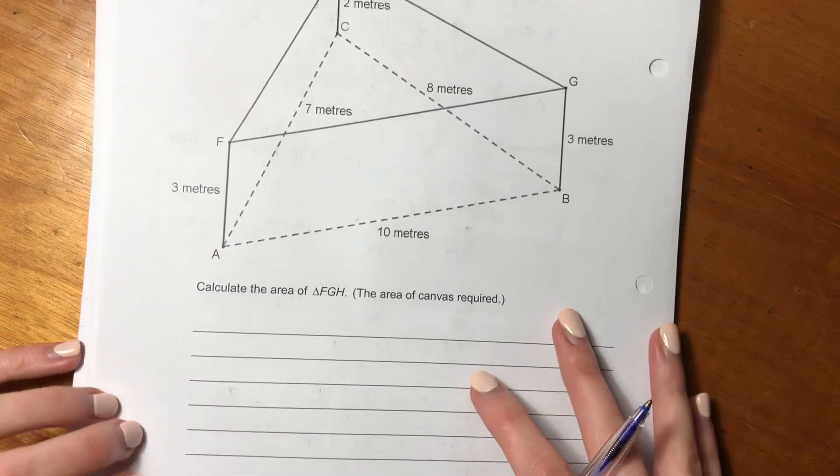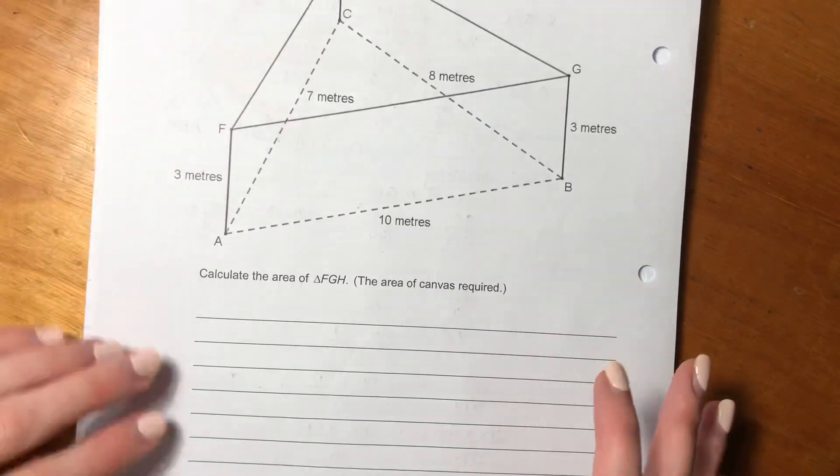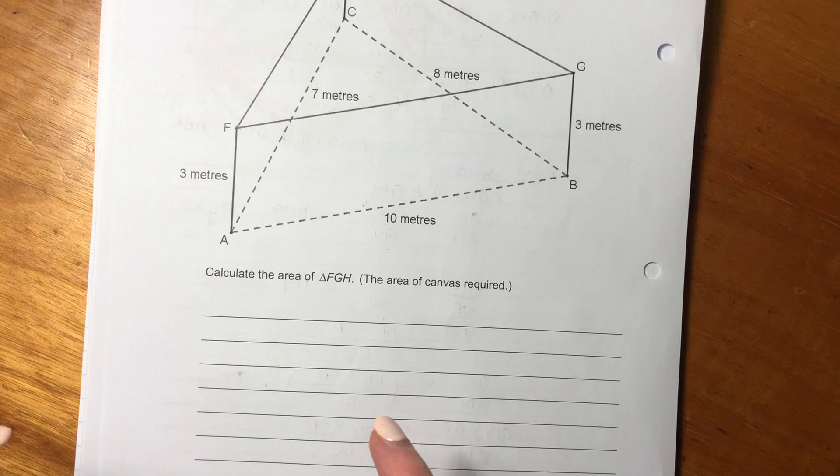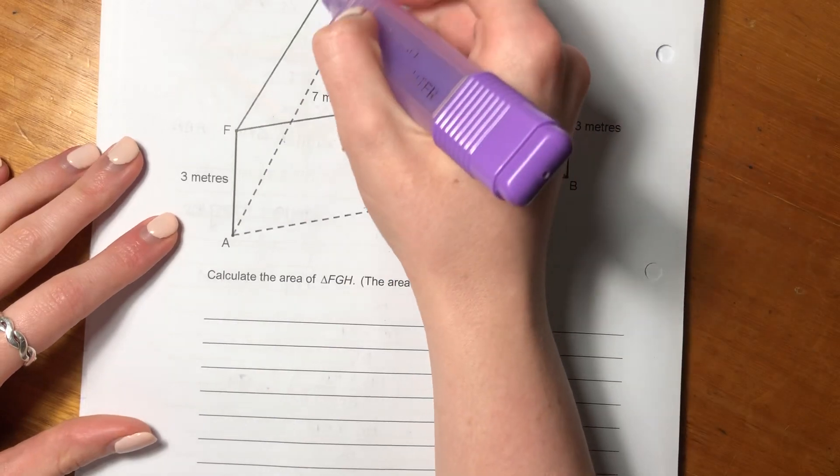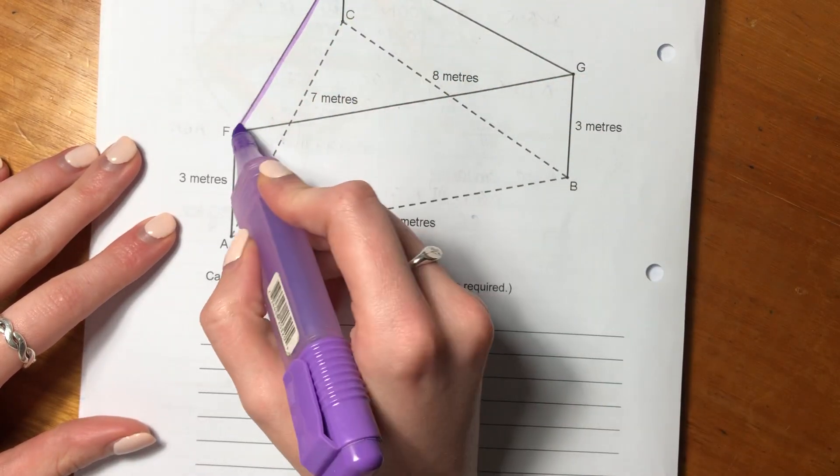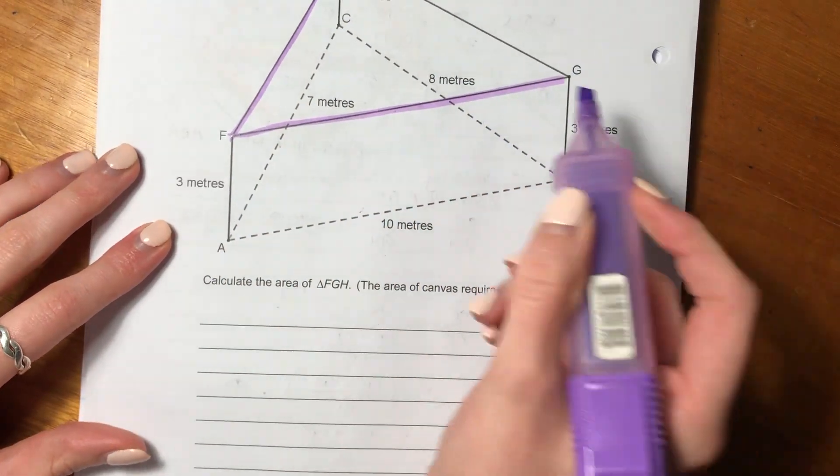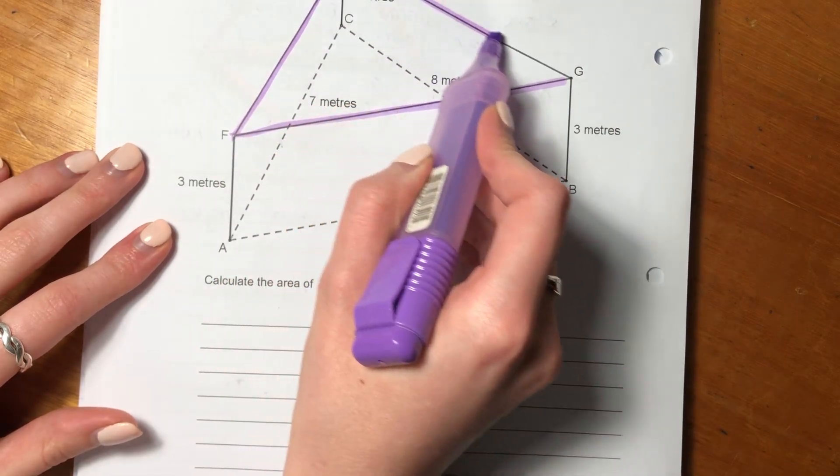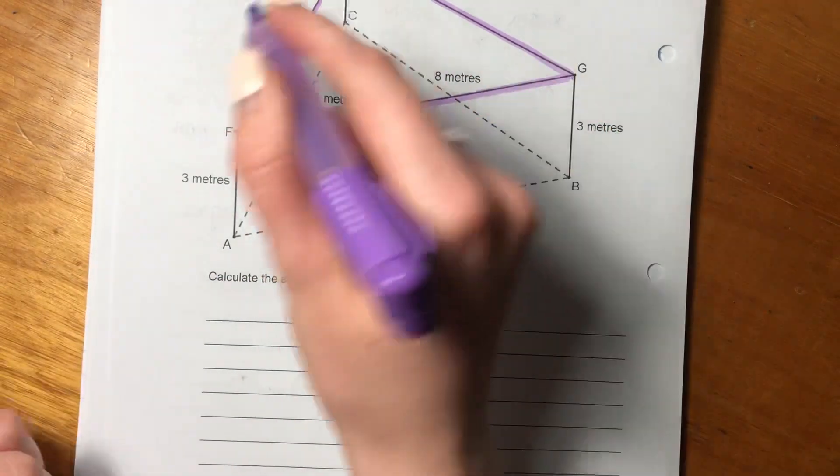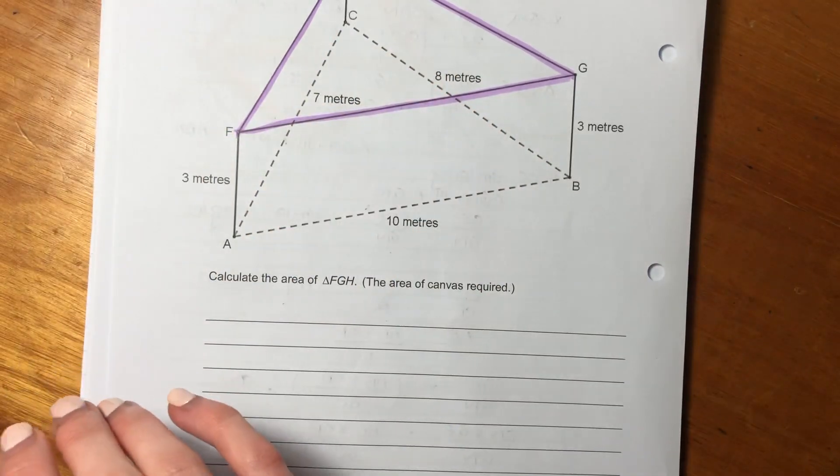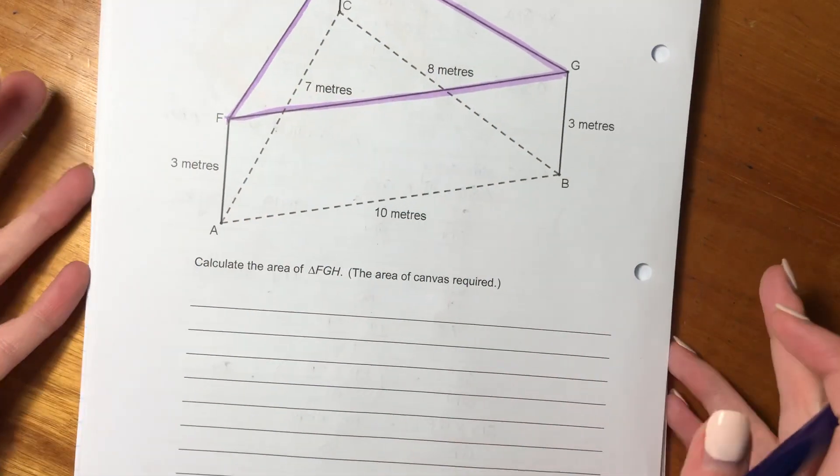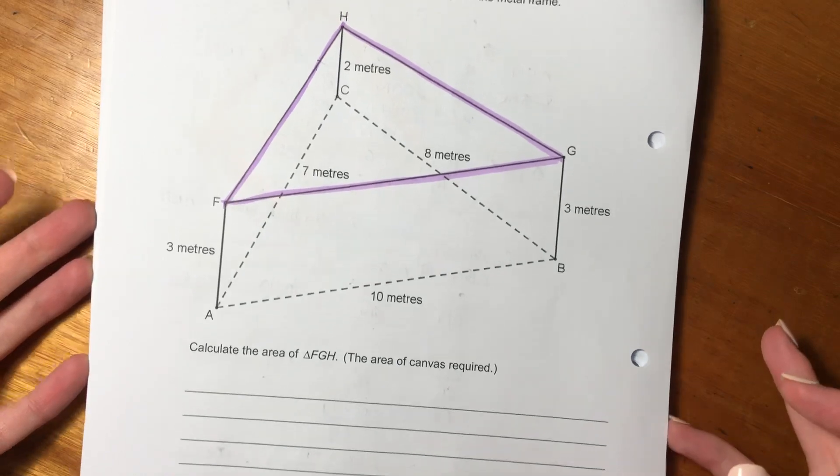So let's now see what it says from a question perspective. It says calculate the area of triangle FGH. So we want this area here. I would color it in, but you know what I mean. It's basically that top plane. So what we're going to do, and I think what's quite important here is we need to think about how we want to go about this.